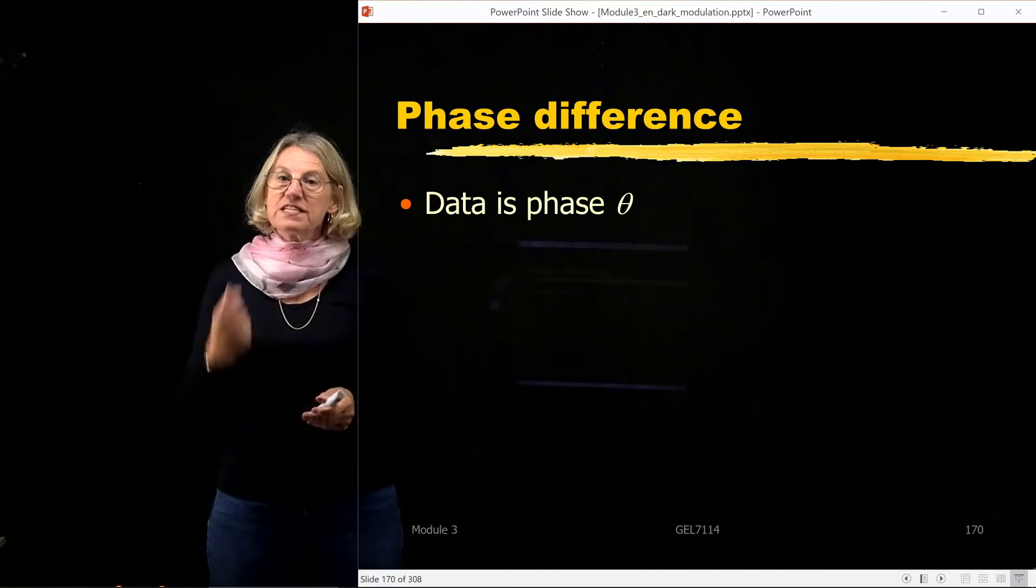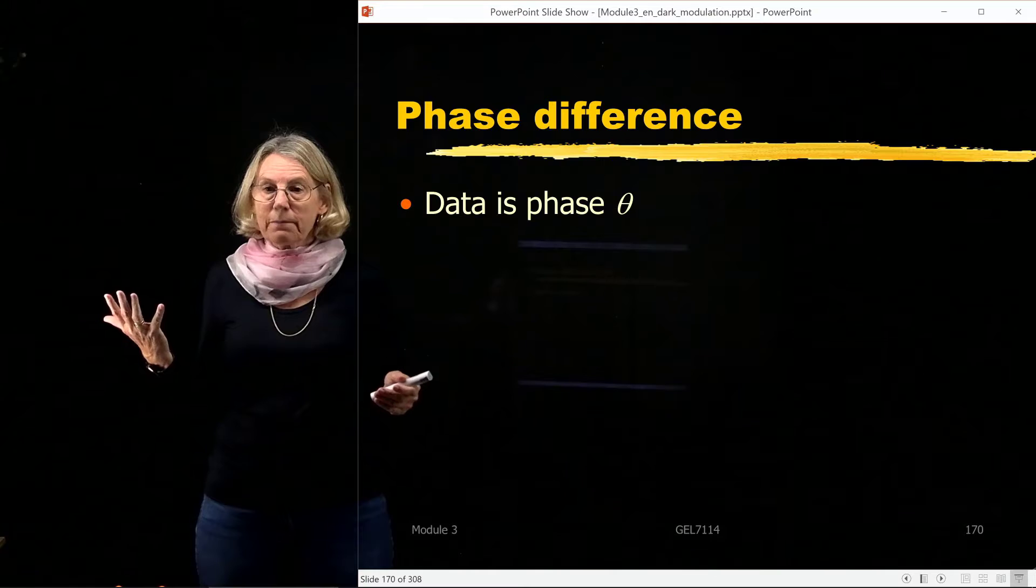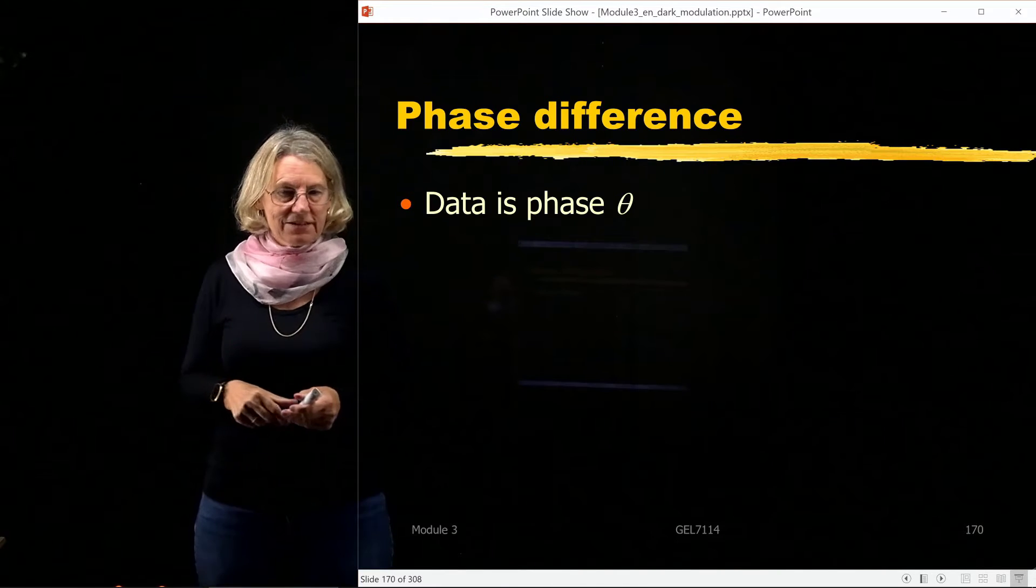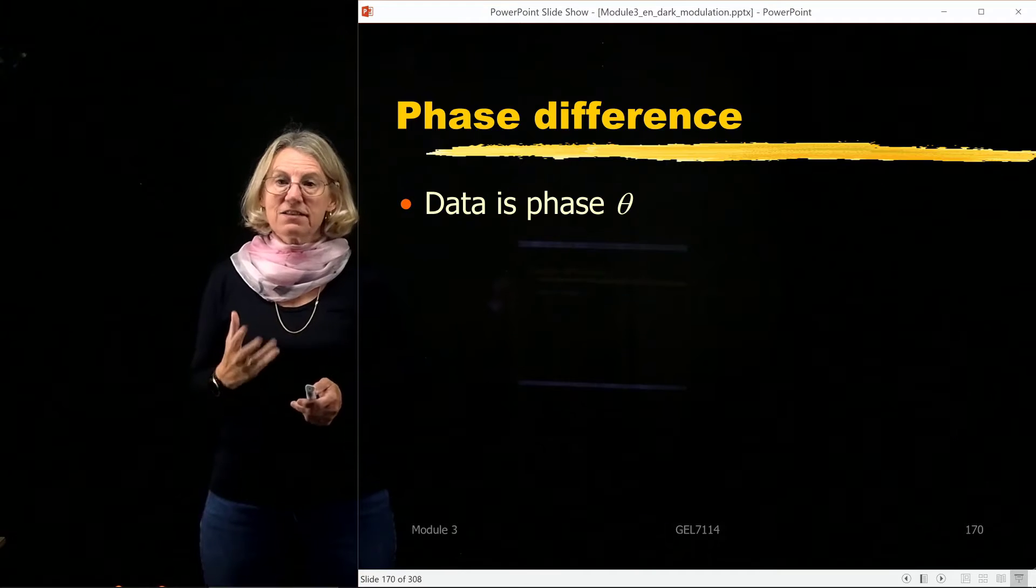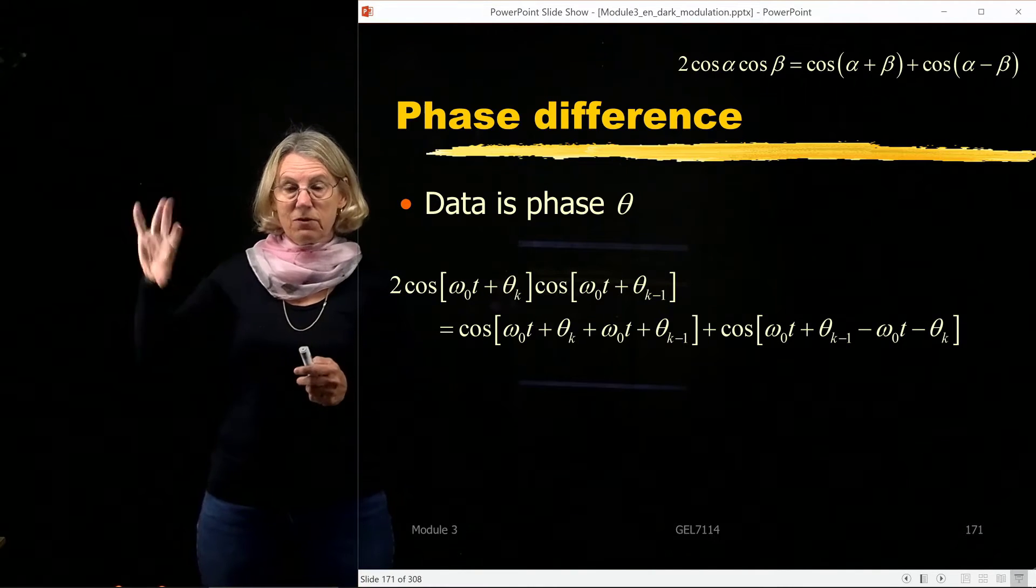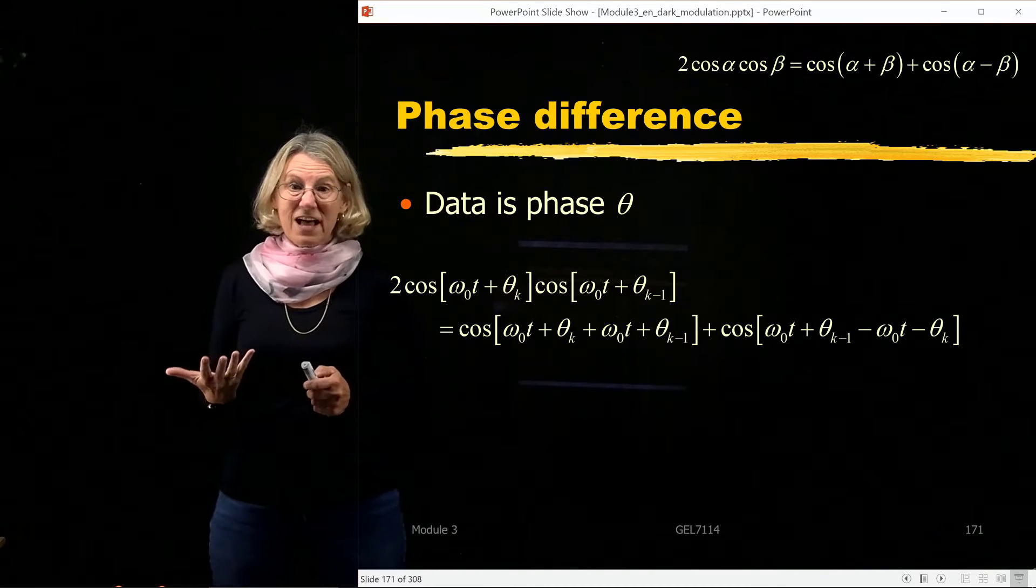So recall that the data is encoded in the phase. That's what phase shift keying is all about. Now I'm going to be doing differential, and I'd like to show you what that means, differential. So the data is in the phase, and I have this receiver, this funky receiver, which takes the received signal in and correlates with itself.